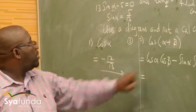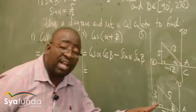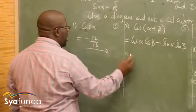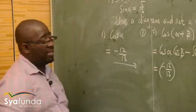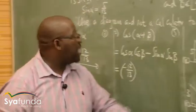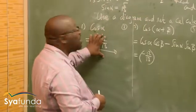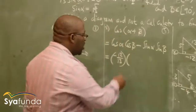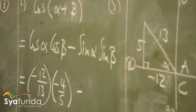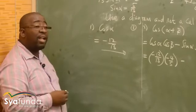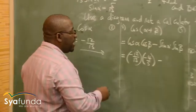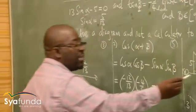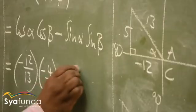Now let's do this. Cos alpha: when they talk about alpha, I go to the diagram of alpha. I already know what cos alpha is — when they ask me for cos alpha, I just take it and push it in, which is minus 12 over 13. Cos beta: I go to the beta diagram. I'm only given tan, so let me find cos beta. Cos is adjacent over hypotenuse, so it's going to be minus 4 over 5. Now sine alpha — do I have sine alpha? Yes, I got it: sine alpha is 5 over 13. Sine is opposite over hypotenuse, which is 5 over 13.